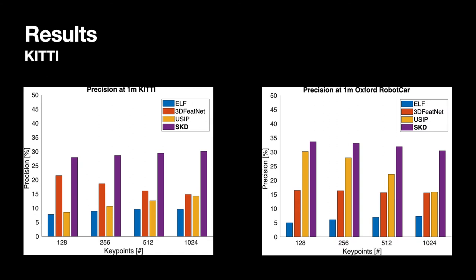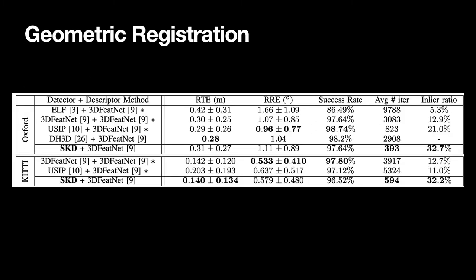Now, let's see how our algorithm performs when actually matching the keypoints. Here, we show one possible application of our keypoint detector that is geometric registration. We use RANSAC in order to perform the geometric registration. The table represents the results of the Oxford RobotCar and KITTI datasets. In order to be fair to other methods, we use the same 3DFeatNet descriptor for evaluation. RTE and RRE refer to relative translation and rotational errors. Success rate is the number of point clouds for which RANSAC was able to find the correct registration. The last two columns are the average number of iterations RANSAC took and the inlier keypoint ratio. While our method is within standard deviation of other methods when looking at the rotational and position errors, it is much quicker to find the correct transformation with a higher number of inliers. This is likely because the keypoints appear in almost the same locations.